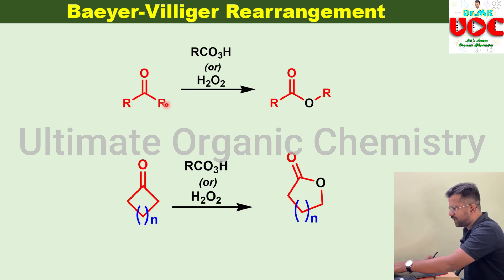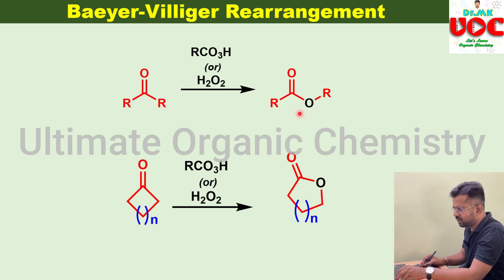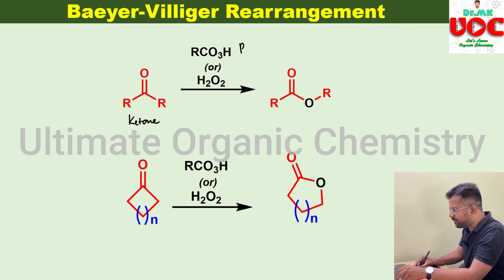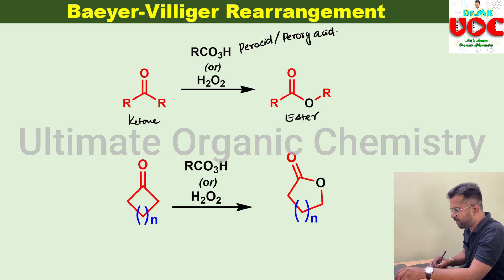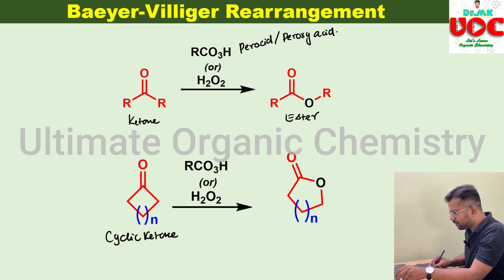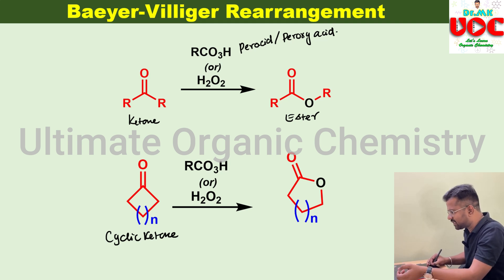Let us learn Baeyer-Villiger rearrangement in detail. This reaction involves conversion of a ketone into an ester. When a ketone is treated with peracid or in the presence of hydrogen peroxide, it will be converted into an ester. Similarly, when a cyclic ketone is treated with peracid, it will be converted into the corresponding cyclic ester, which is generally called a lactone. Basically in this reaction, ring expansion is taking place.